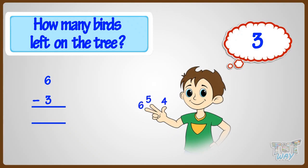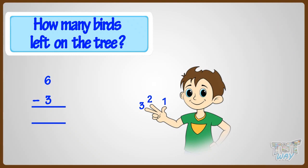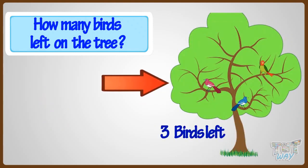Now count the fingers. One, two, three. Six minus three equals three. We did it! Three birds left.